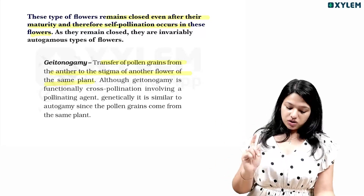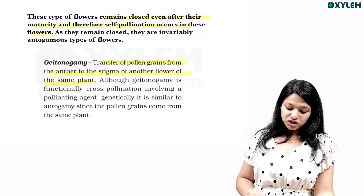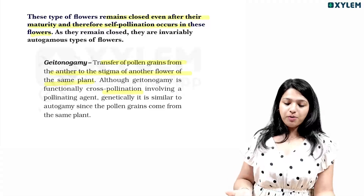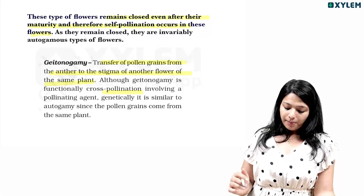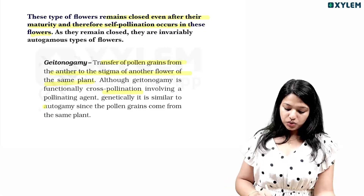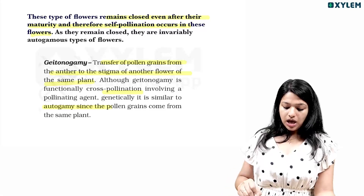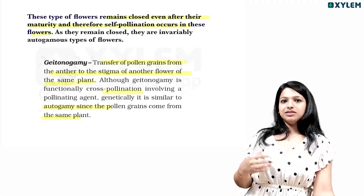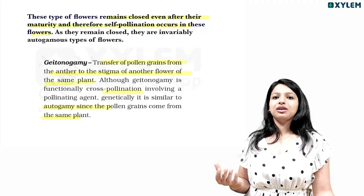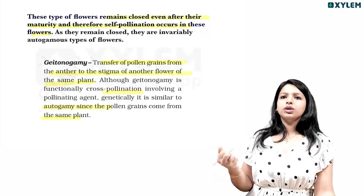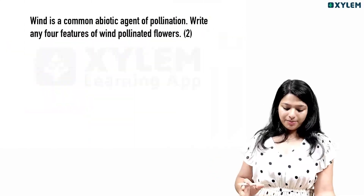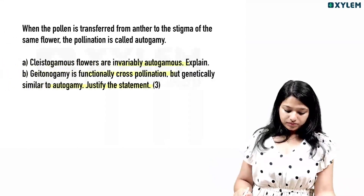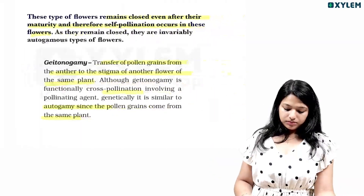Geitonogamy is functionally cross-pollination involving a pollinating agent, but it is genetically similar to autogamy since pollen grains come from the same plant.